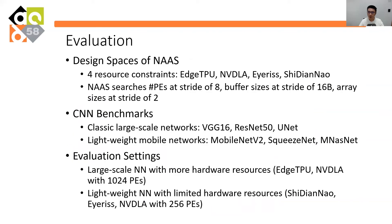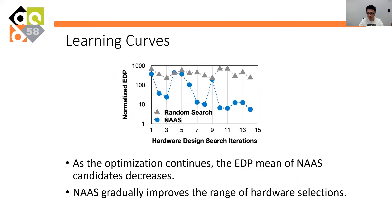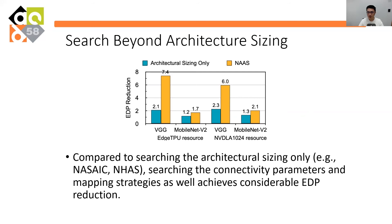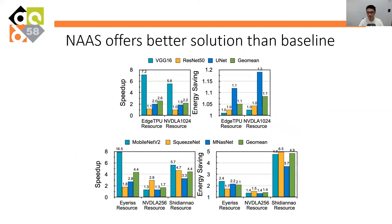We evaluated NAAS with four hardware resource constraints — HTPU, NVIDIA, IRIS, and CDNL — on two sets of CNN benchmarks, including classic large-scale networks such as VGG16 and ResNet50, and lightweight mobile networks such as MobileNetV2 and SqueezeNet. As the learning curve shows, the average energy delay product of candidates' pools decreases during NAAS optimization, while it stays high in the random search baseline. Compared to searching the architectural sizing only, searching the connectivity and mappings at the same time achieves much better energy delay product. Our NAAS consistently offers better solutions within different hardware resources for different neural network benchmarks, providing up to 16 times speedup and 6 times energy savings.